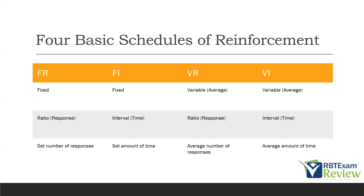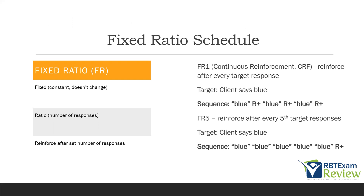First one: fixed ratio. It's the most basic of the basic reinforcement schedules. It's fixed, so that means it doesn't change. It's based on the number of responses, and you're reinforcing after a set number of responses. FR1 is continuous reinforcement — the best way to teach new skills. FR1 means you reinforce after every target response. So if our target is saying 'blue,' the sequence would be: blue, reinforce, blue, reinforce, blue, reinforce.